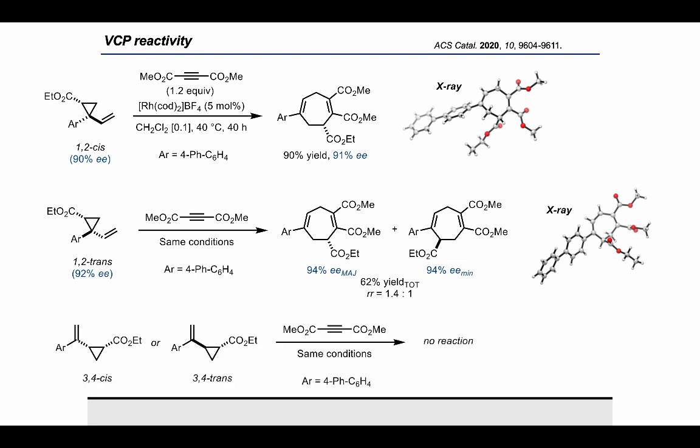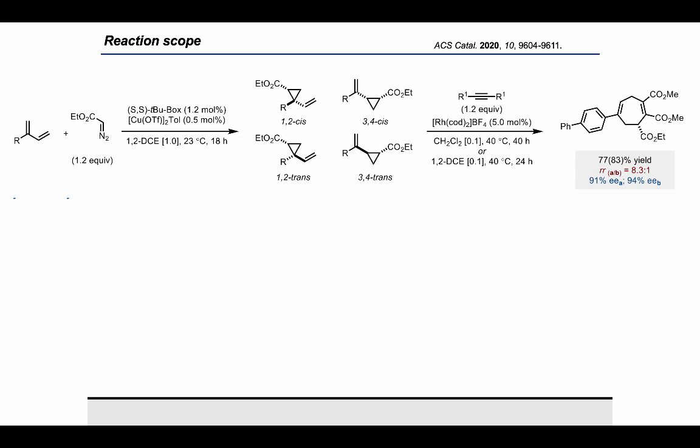Another important experiment was to determine the chemoselectivity. We engaged the isolated 3,4-VCP isomers in the same reaction conditions, and we did not observe any reactivity. With these very promising results in hand, we moved on to apply our protocol to the VCP mixture without separation. In this case, the two isomers were obtained in an 8.3 to 1 ratio, and were isolated with 77% combined yield and 91% enantiomeric excess for the major product. The higher yield value reported in brackets is based only on the 1,2-VCPs, omitting the unreactive 3,4-VCPs from the calculation.